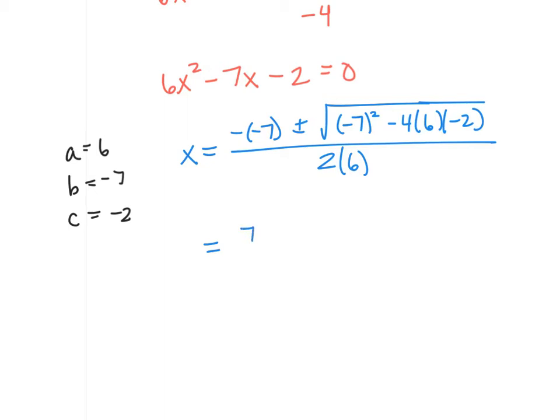Minus 4ac all over 2a. So a negative negative 7 becomes positive, plus or minus the square root of... I don't need a square root that big probably, because we're going to simplify that down. If you do all that math, you get a 97.